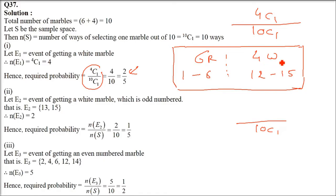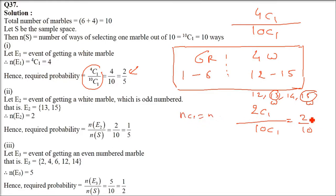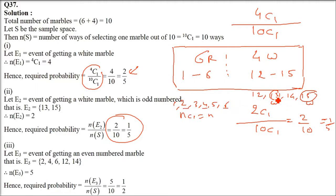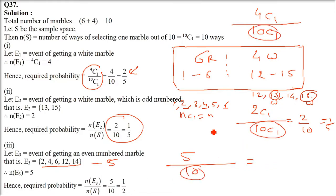For white and odd numbered: writing out 12, 13, 14, 15 — the odd numbers are 13 and 15, only 2 possibilities. So 2 by 10, which is 1 by 5. For the third part — even numbered — even numbers from the red marbles (1–6) are 2, 4, 6 (three evens), and from white marbles (12–15) are 12, 14 (two evens). So 5 favorable cases, 10C1 = 10 total. Answer is 5 by 10, which is 1/2.